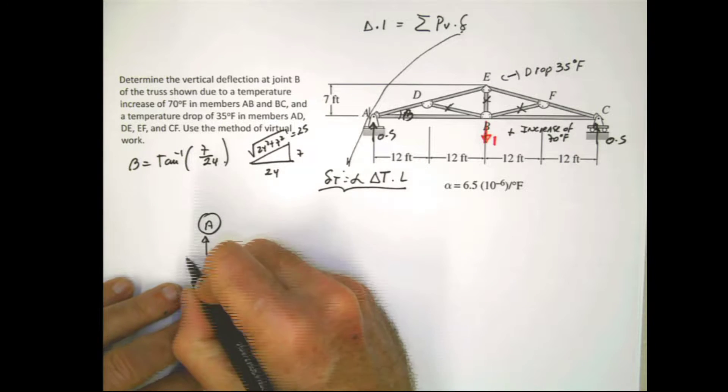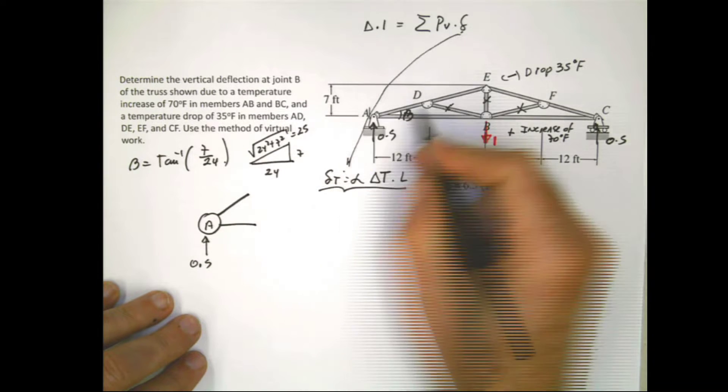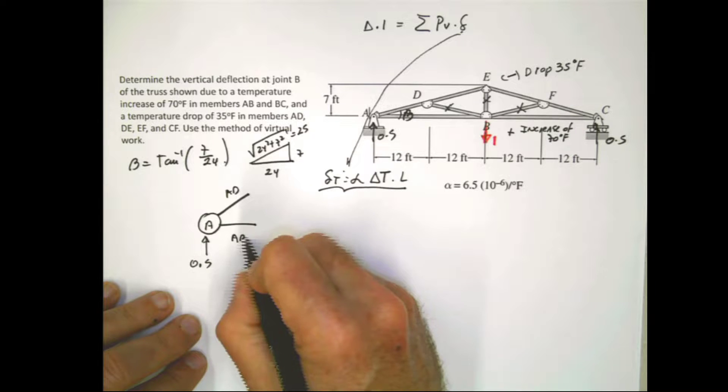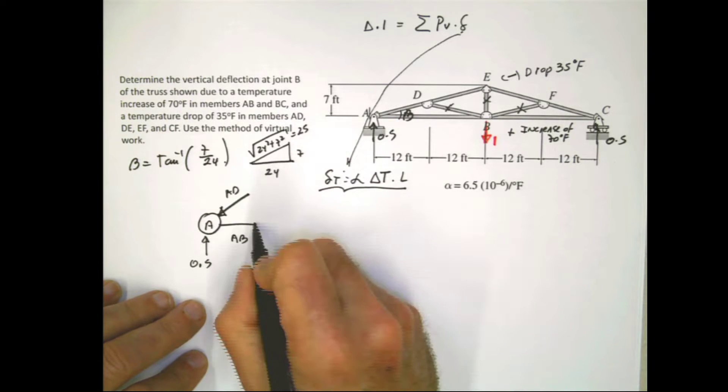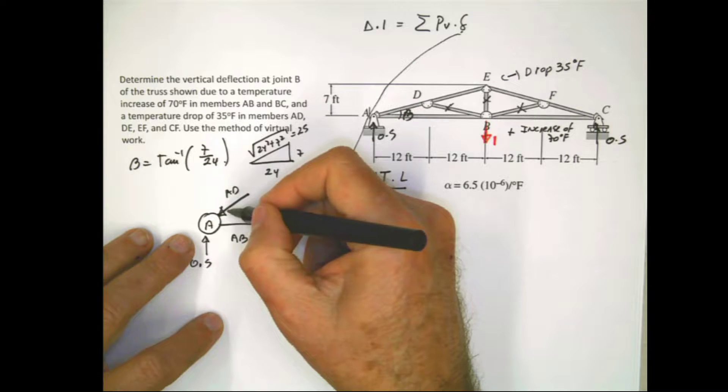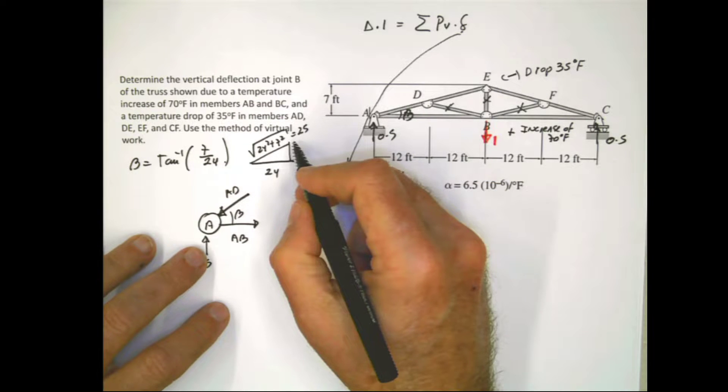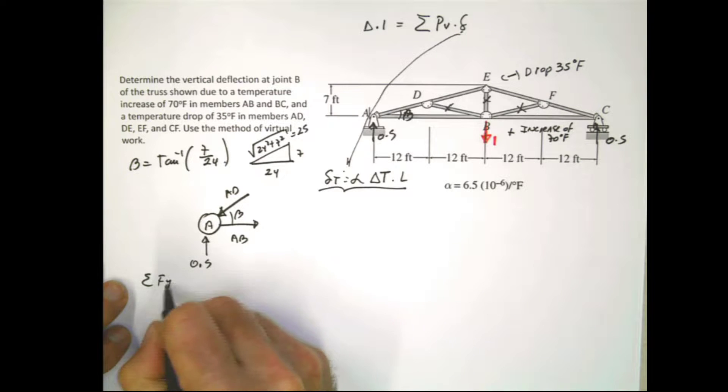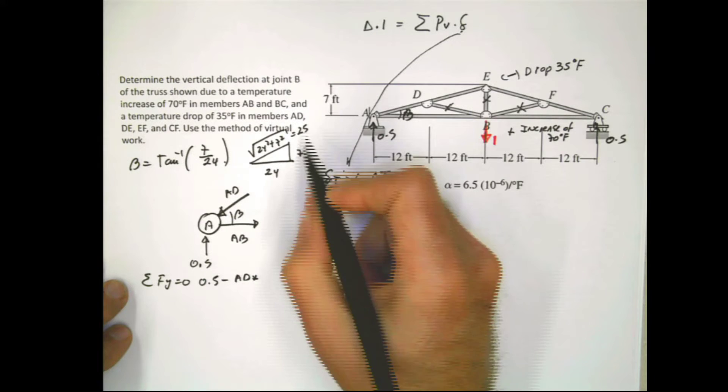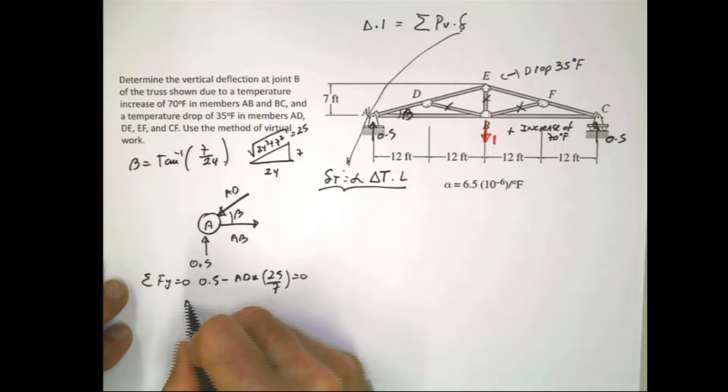So you can use that. And if you use joint A, we can do an analysis, a quick analysis of joint A here. Joint A, I'm going to have this 0.5. I'm going to have this and this. This is AD and this is AB. And of course this has to come in this direction and this has to come in that direction, because the only thing opposing to this reaction vertically is this. And if this goes to the left, this has to go to the right. And this angle here I call it beta and beta is that. And summation of forces in Y.